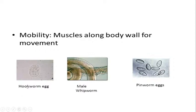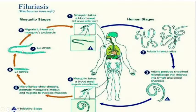Examples include hookworms, male whipworms, and pinworms. Pinworm eggs and Ascaris can be produced in jelly-like structures in the body. For mobility, nematodes use muscles along the body wall for movement — similar to how snakes crawl — using a sinuous crawling motion.